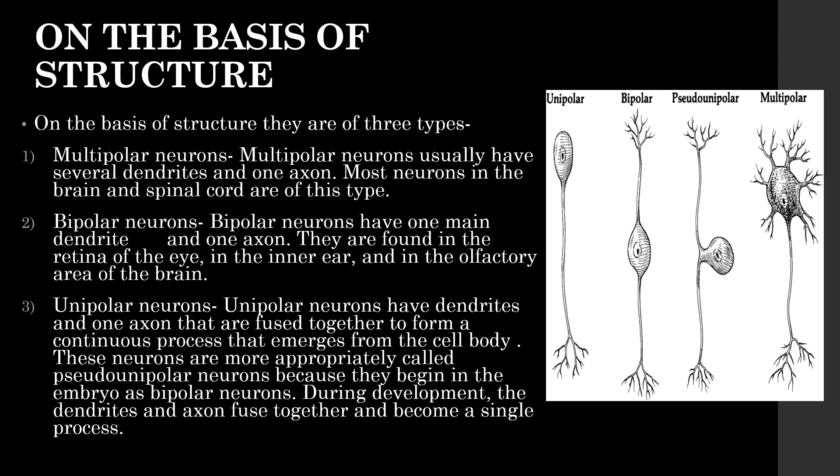Unipolar neurons have dendrites and one axon that are fused together to form a continuous process that emerges from the cell body. These neurons are more appropriately called pseudo-unipolar neurons because they begin in the embryo as bipolar neurons. During development, the dendrites and axons fuse together and become a single process.